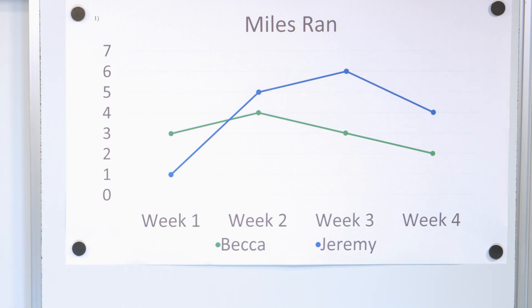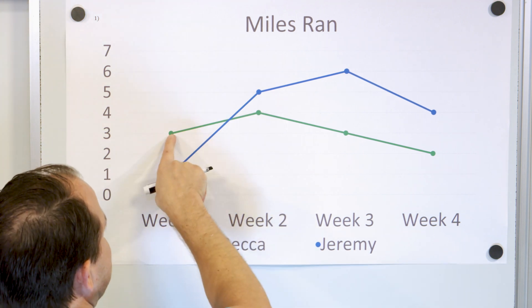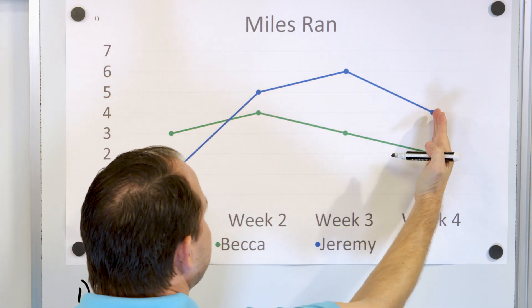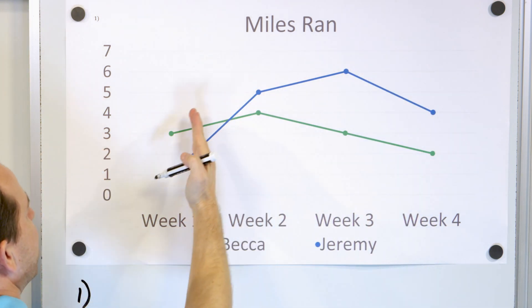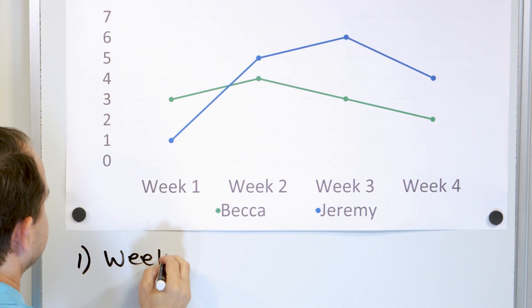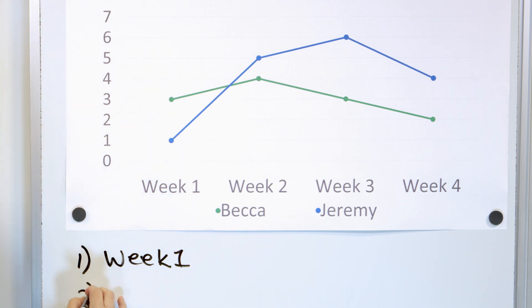All right, let's take a look at question number one. On what week did Becca run more than Jeremy? We just answered the question. We have Becca in green right here and Jeremy in blue right here. Here, Jeremy ran more, Jeremy ran more, Jeremy ran more, but here, Becca actually ran more. So what week did Becca run more than Jeremy? It's week one. That's the answer to question one.